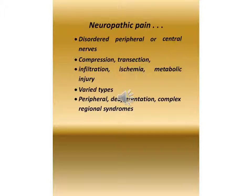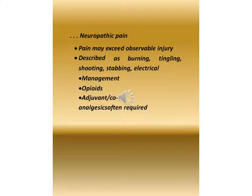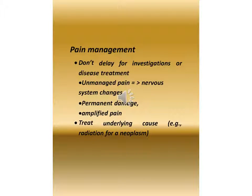Neuropathic pain involves disordered peripheral or central nerves due to compression, transection, infiltration, ischemia, or metabolic injury. Varied types include peripheral, deafferentation, and complex regional syndromes. Pain may exceed observable injury and is described as burning, tingling, shooting, stabbing, or electrical. Management includes opioids and adjuvant or co-analgesics, often required.